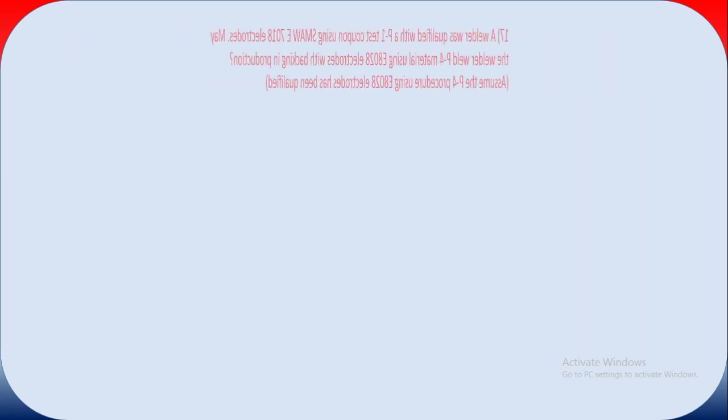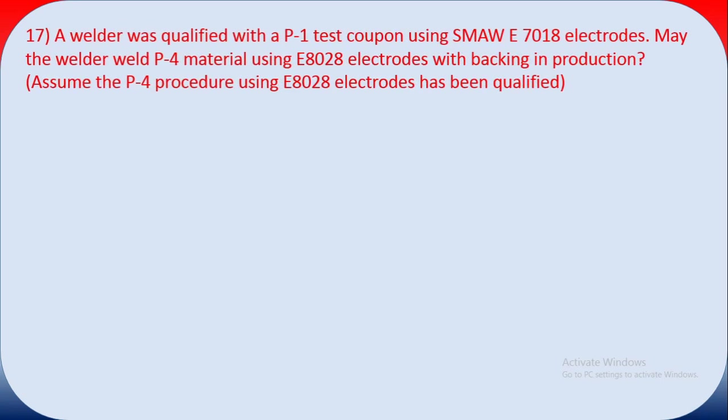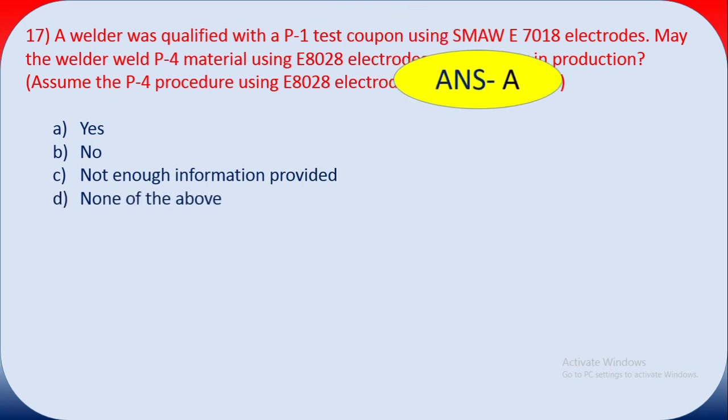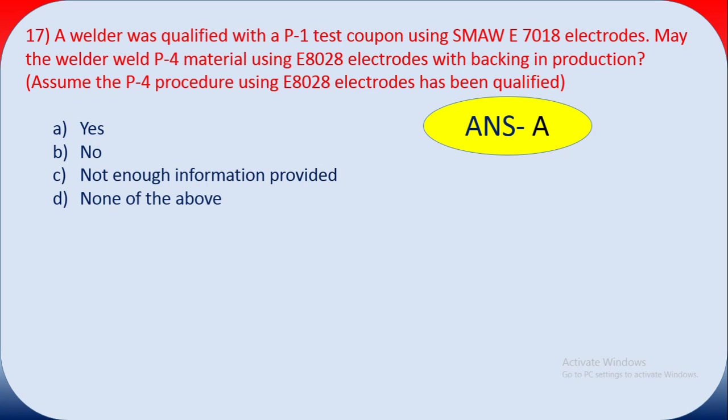Question seventeen: a welder was qualified with a P1 test coupon using SMAW E7018 electrode. May the welder weld P4 material using E8018 with backing in production, assuming the P4 welding procedure using E8018 has been qualified? The answer is yes — because of the SMAW E7018 electrode and the P4 material classification, the answer is A: yes.